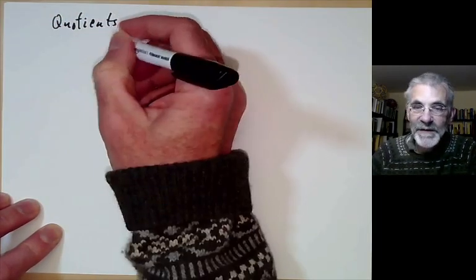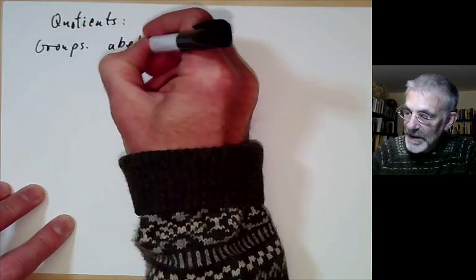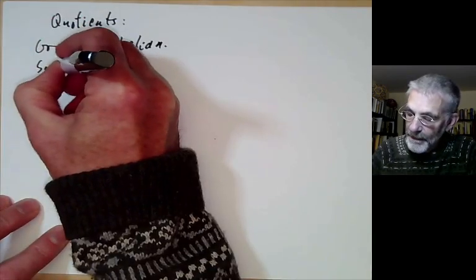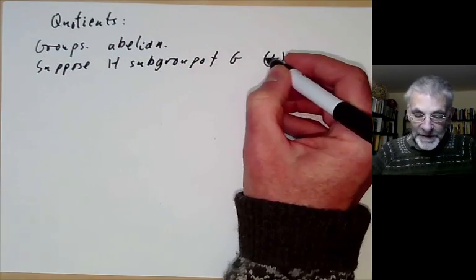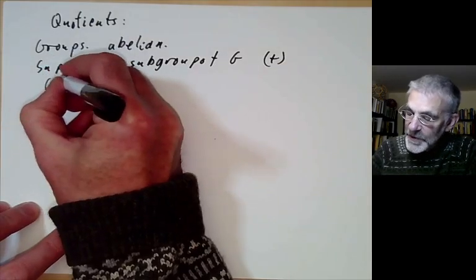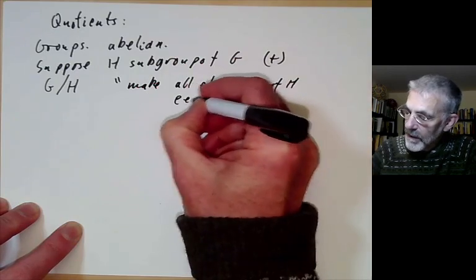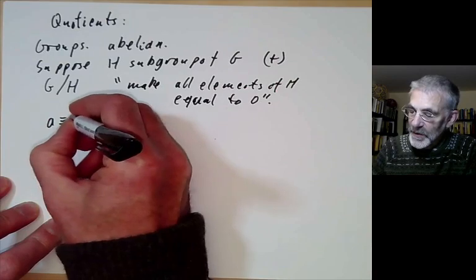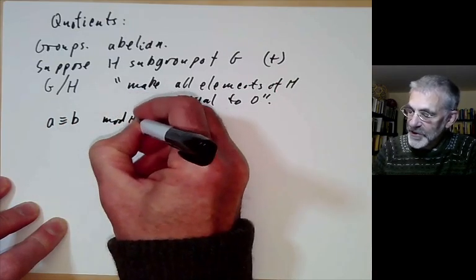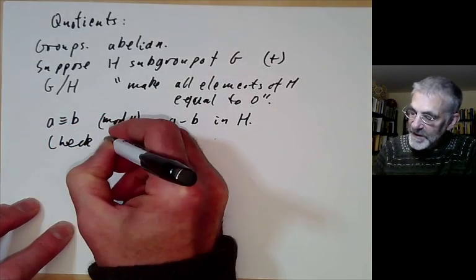Now I want to define quotients of rings as a generalization of taking the integers modulo a number. First, let's define quotients of groups, taking groups to be abelian to avoid minor complications. Suppose H is a subgroup of the group G, written with addition. We define the quotient group G mod H, which is roughly what you get by making all elements of H equal to 0. More precisely, we define an equivalence relation on G: a is congruent to b modulo H if a − b is in H.